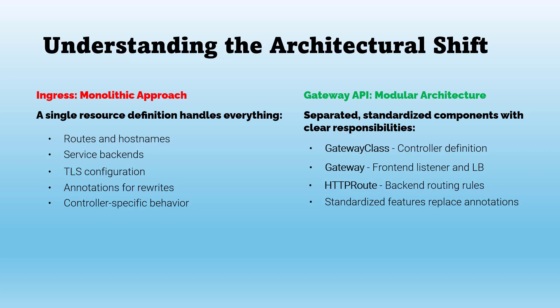We are not deleting the application, the service, or the TLS secret — we are only replacing the ingress layer with the Gateway API layer. Now that the architecture is clear, let's jump into the actual migration. Before writing any YAML, let's look at the exact migration steps we are going to follow — a step-by-step process for the migration plan from Ingress to Gateway API that you can use in production environments.